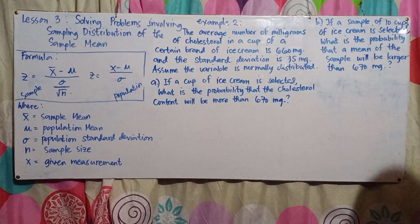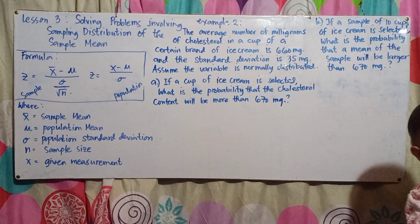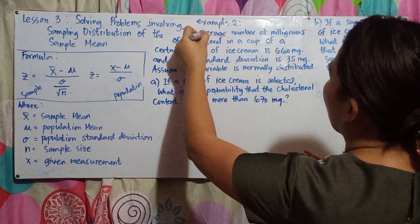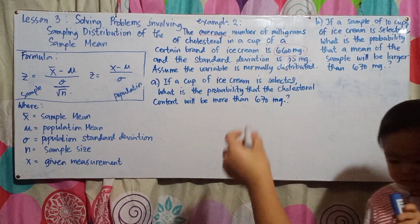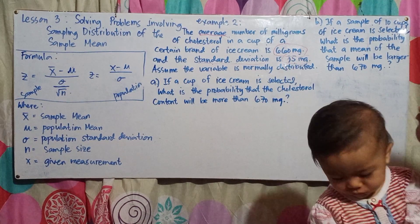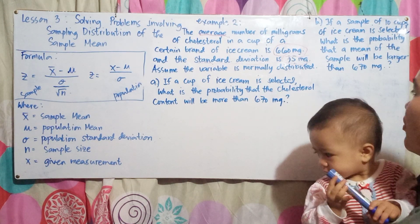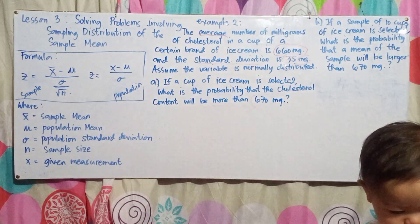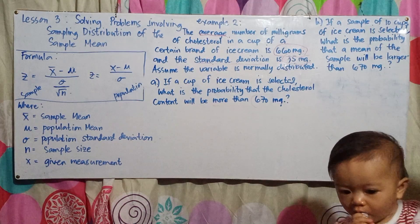Example 2: The average number of milligrams of cholesterol in a cup of a certain brand of ice cream is 660 milligrams, and the standard deviation is 35 milligrams. Assume the variable is normally distributed. So the mean cholesterol content in one cup of ice cream is 660 mg and the standard deviation is 35 mg. Letter A: If a cup of ice cream is selected, what is the probability that the cholesterol content will be more than 670 milligrams?